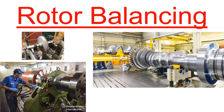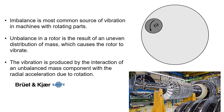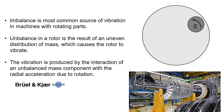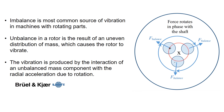Today, let's delve into rotor balancing. Imbalance is the primary cause of vibration in machines with rotating parts. Rotor imbalance results from uneven mass distribution causing vibration. Vibration arises from imbalanced mass interacting with radial acceleration during rotation.